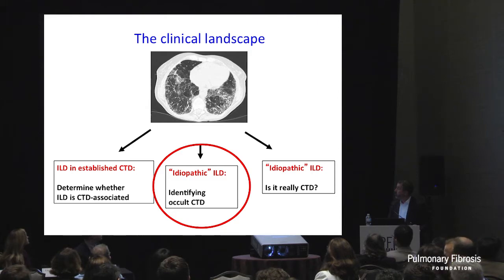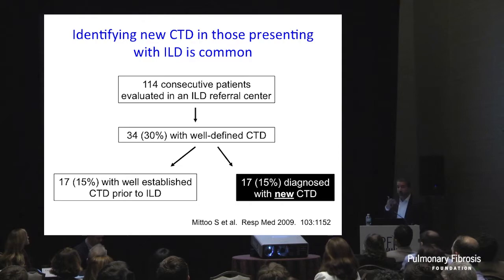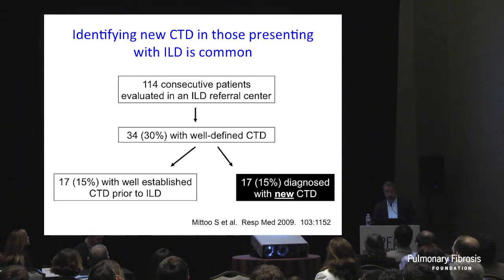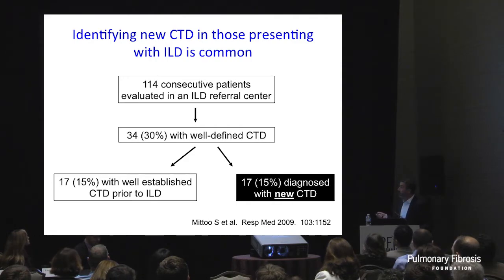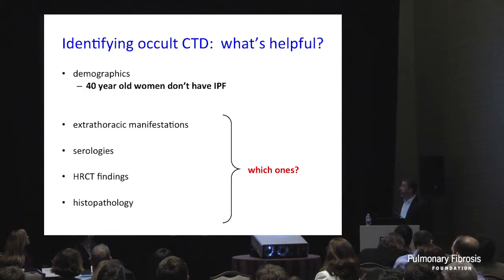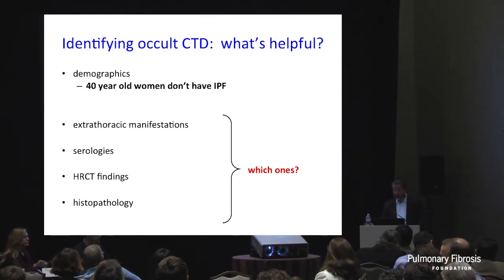The second group of patients are those who present without an existing CTD — they present with ILD and then walk out with a CTD diagnosis. Sonia Danoff's group showed this is not uncommon. In a cohort from Johns Hopkins looking at consecutive patients presenting to a multidisciplinary ILD program, 30 percent walked out with a well-defined connective tissue disease. Importantly, only half had come in with one — meaning half walked out with a defined CTD based on their presenting ILD.